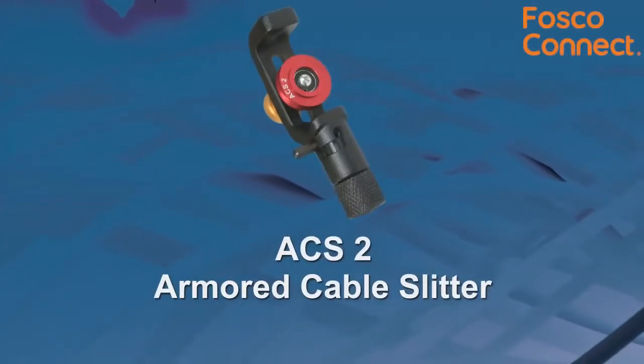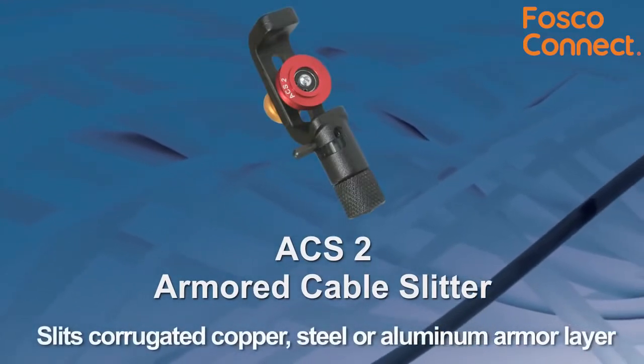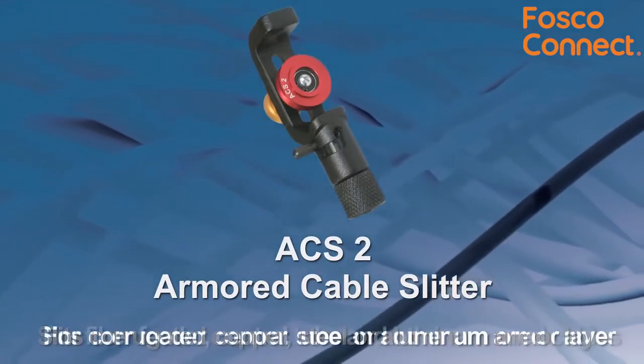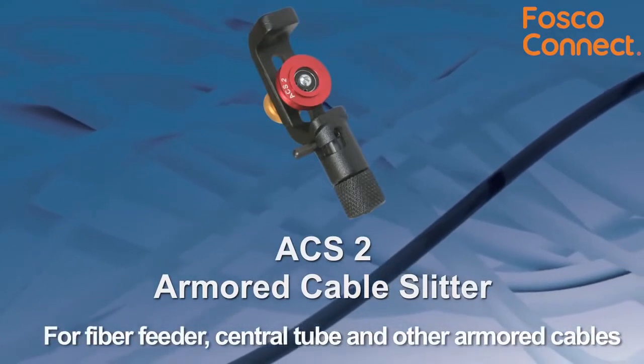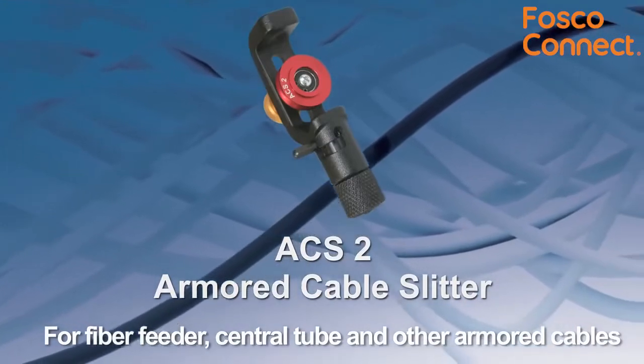The Miller ACS2 tool is an armored cable slitter designed to slit the corrugated copper, steel, or aluminum armor layer on fiber feeder, central tube, and stranded loose tube fiber optic cables, as well as other armored cables.